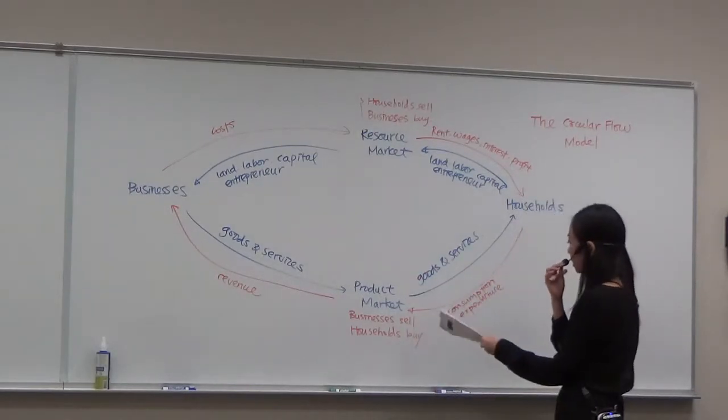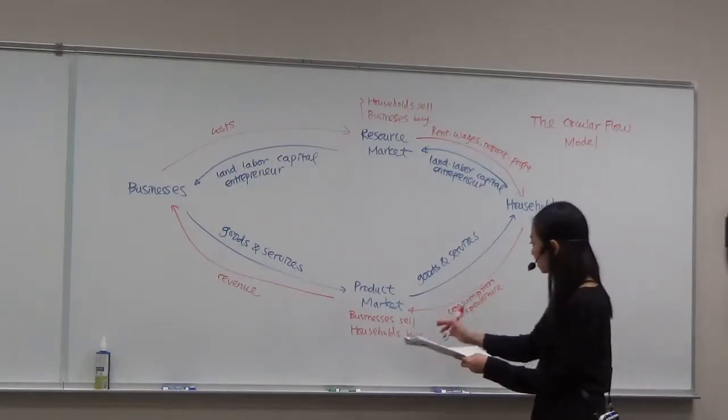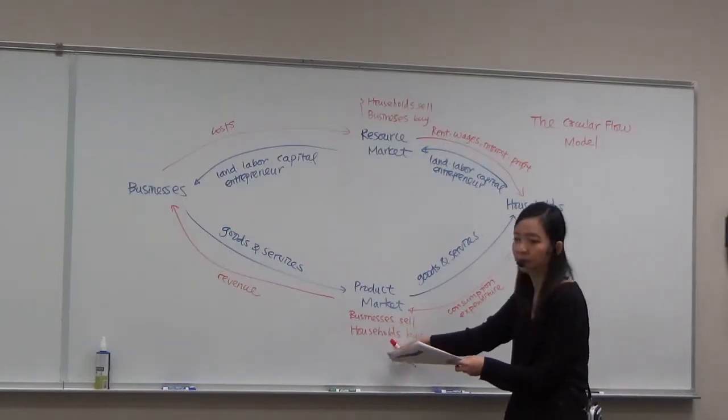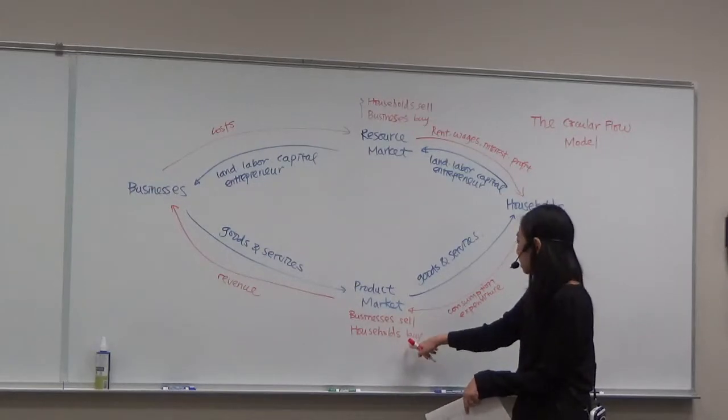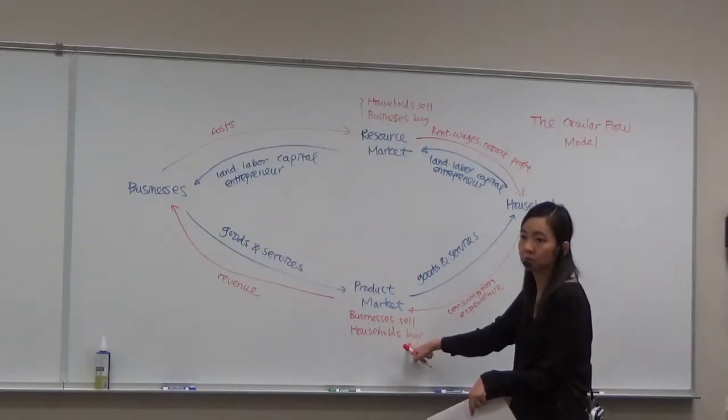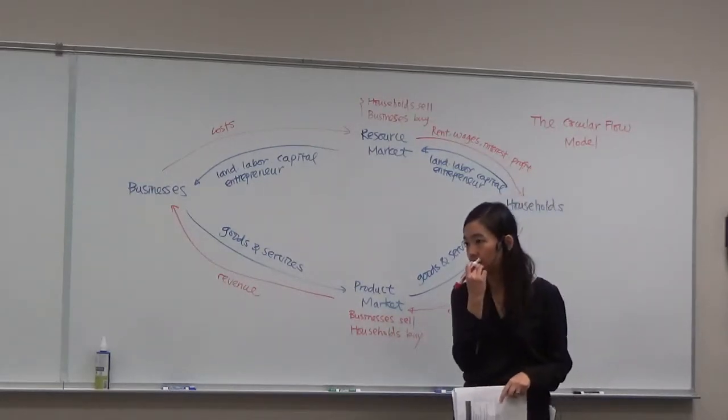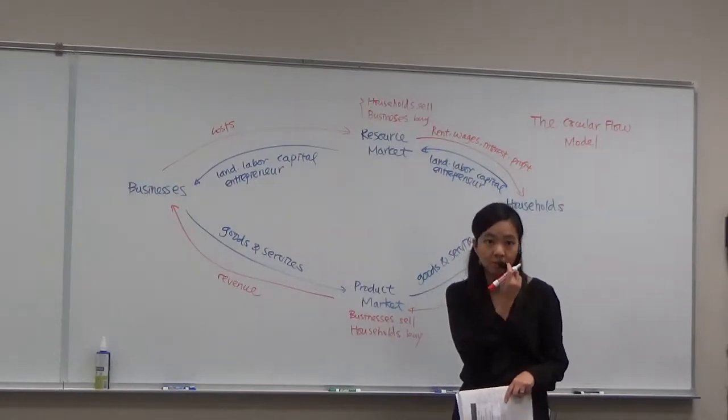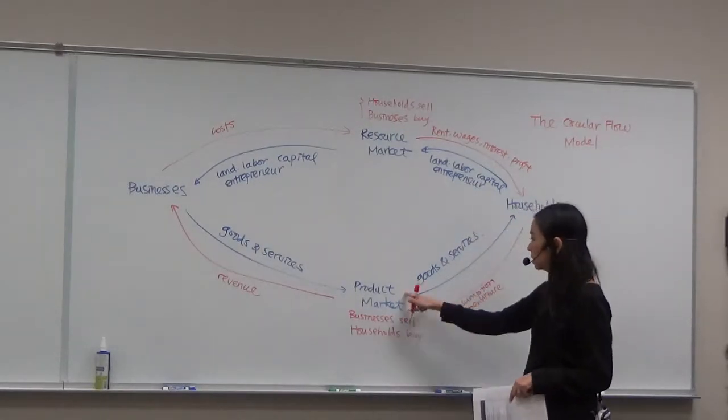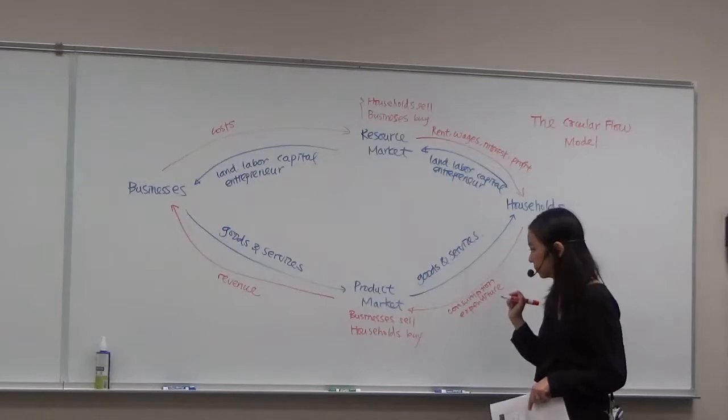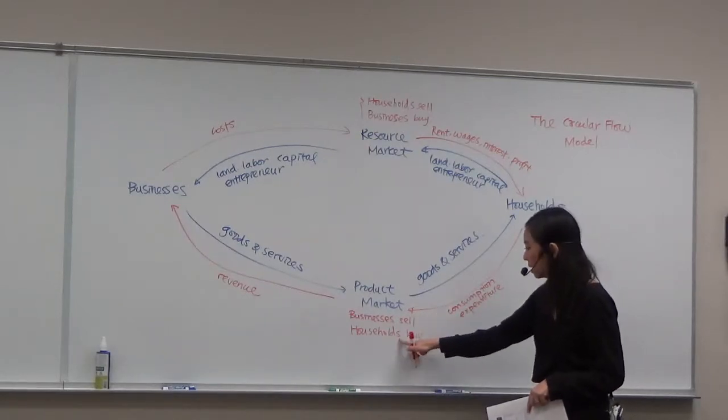The product market is a place where businesses sell and households buy. You buy your milk, eggs, and also services like car services, haircuts, or dry cleaning. These are the product markets where businesses sell and households buy.